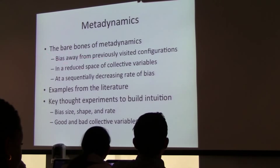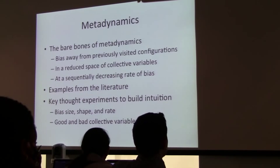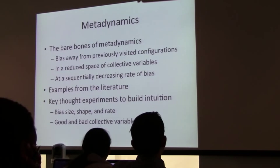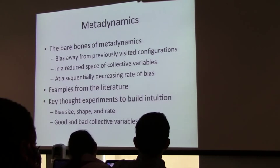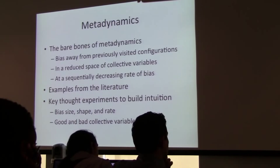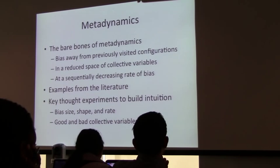You're going to look at a reduced space of collective variables, just like umbrella sampling. And also, you need to sequentially decrease the rate of bias — so every time you see an event, you want to bias away from that less than you bias away from the previous state. The focus of this talk is less on my personal research and more on building a solid foundation so we can apply metadynamics in our research.